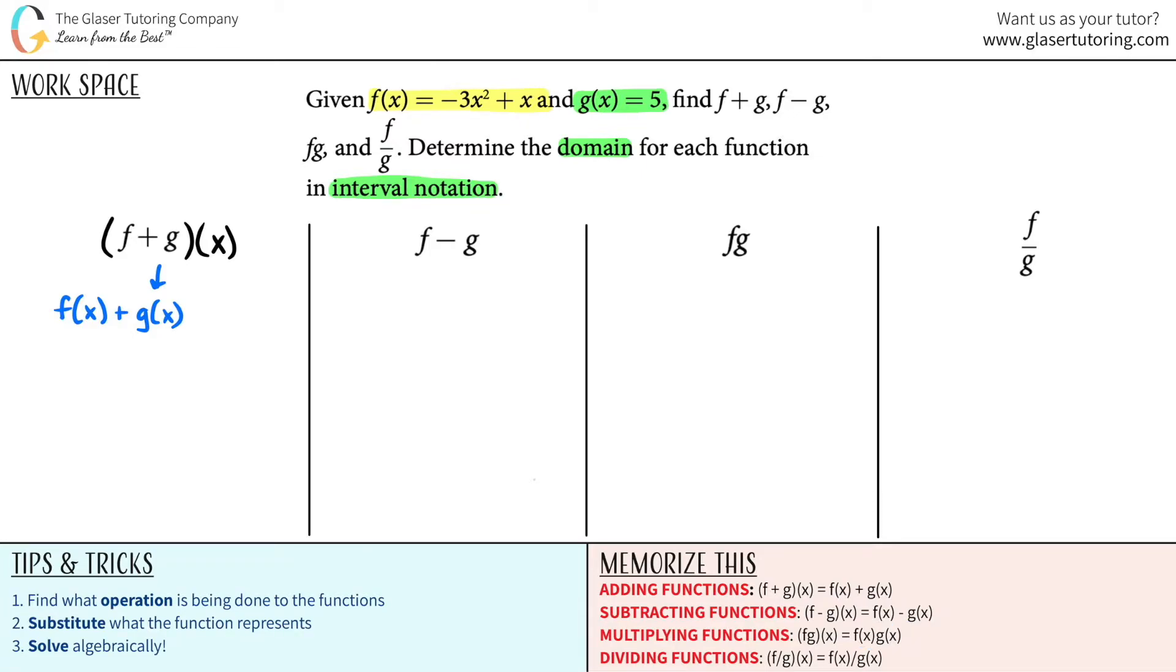Now since we have this for the first one, all I've got to do is plug in what f of x is, plug in what g of x is, and add the two together. So let's go.